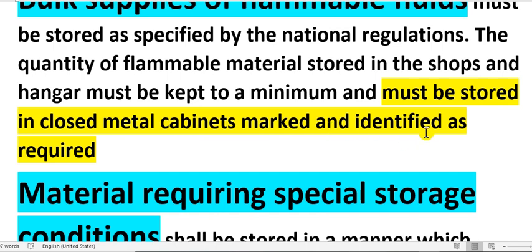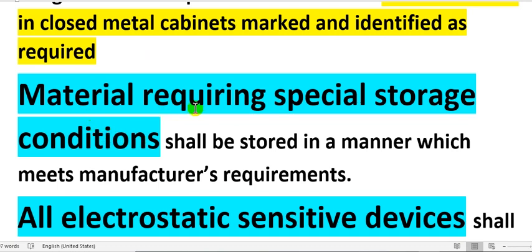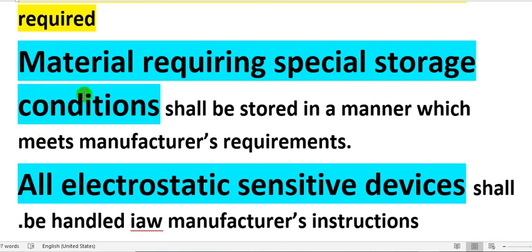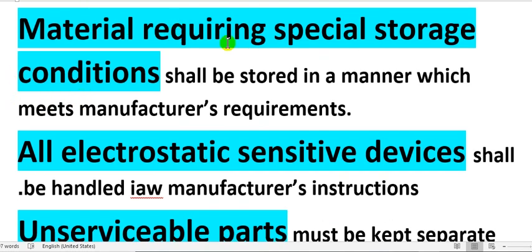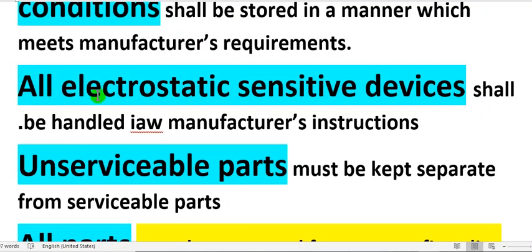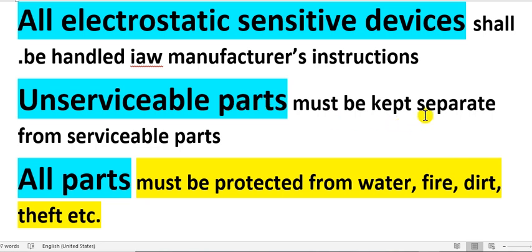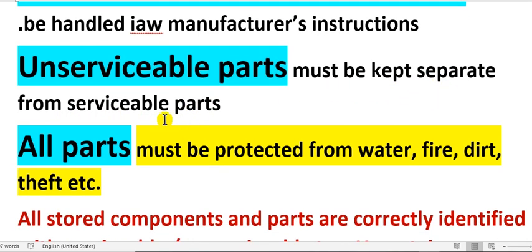Material requirements for special storage conditions: if material requires special storage conditions, it should be stored in a manner that meets manufacturer requirements. All electrostatic sensitive devices shall be handled in accordance with the manufacturer's instructions. Unserviceable parts must be kept separate from serviceable parts and placed in the quarantine area.